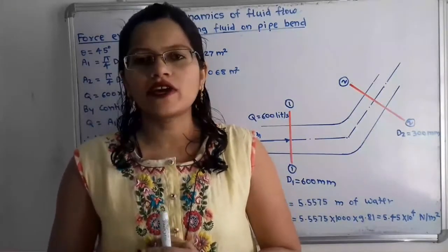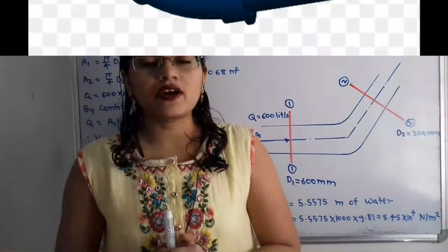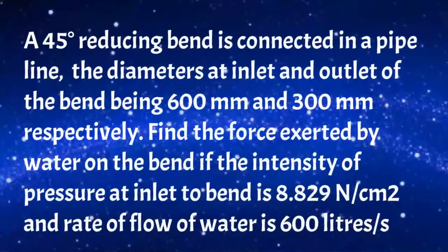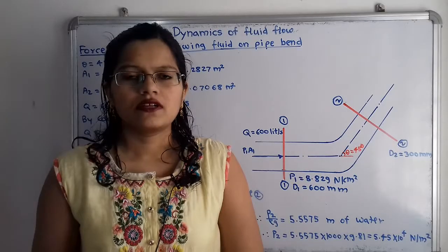Hello friends, this is Priyanka. Today we are going to solve a problem on dynamics of fluid flow. In this video we are going to find out what is the force exerted by water on a pipe bend. The given problem: a 45-degree reducing bend is connected in a pipeline, the diameters at the inlet and outlet of the bend being 600 mm and 300 mm respectively. Find the force exerted by water on the bend if the intensity of pressure at inlet is 8.829 N/cm² and the rate of flow of water is 600 liters per second.